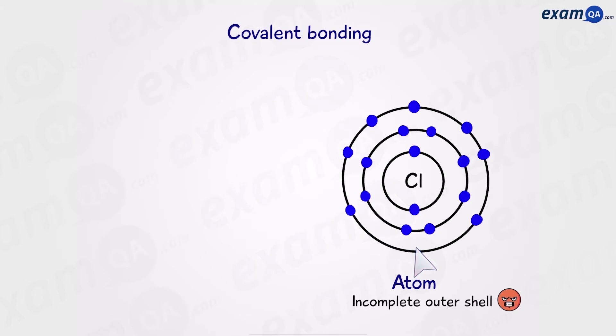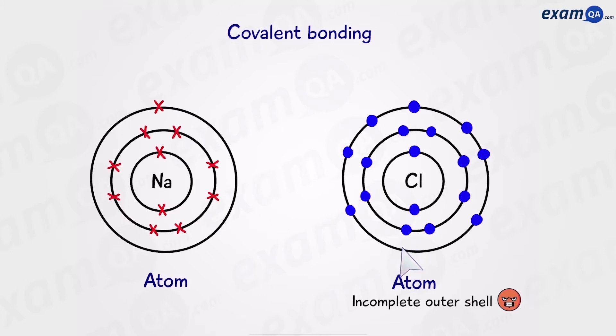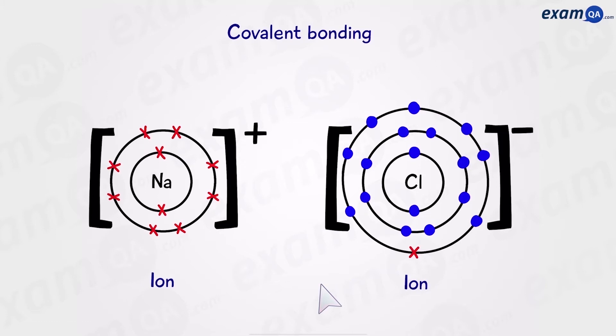Now we saw in ionic bonding that one way to fix this problem was to get a metal, for example sodium. Sodium would lose an electron and chlorine would gain this electron. Then we would produce two ions, both of them having a complete outer shell.